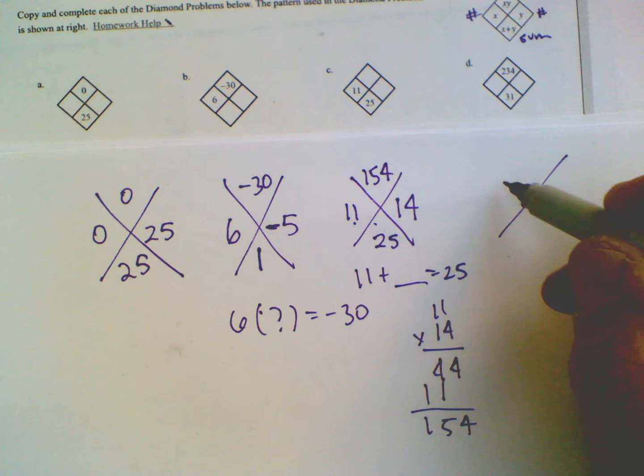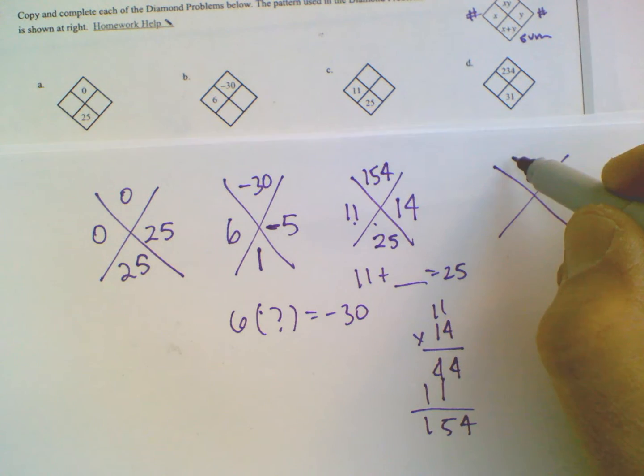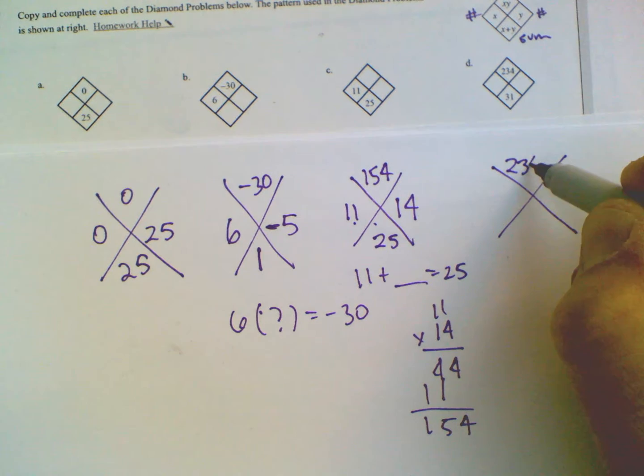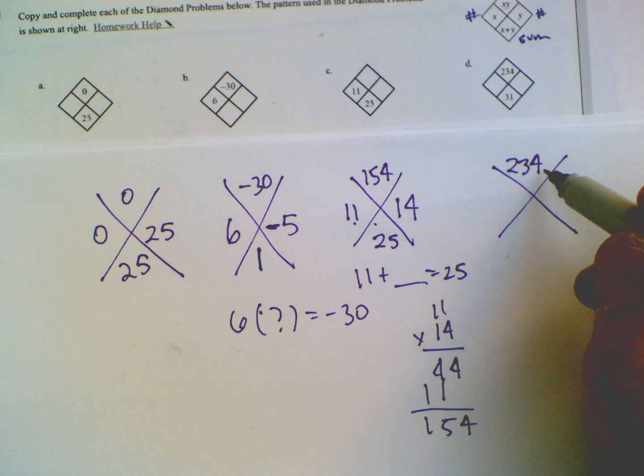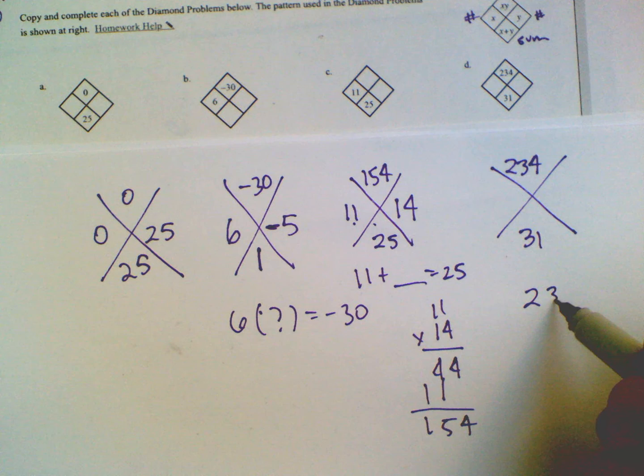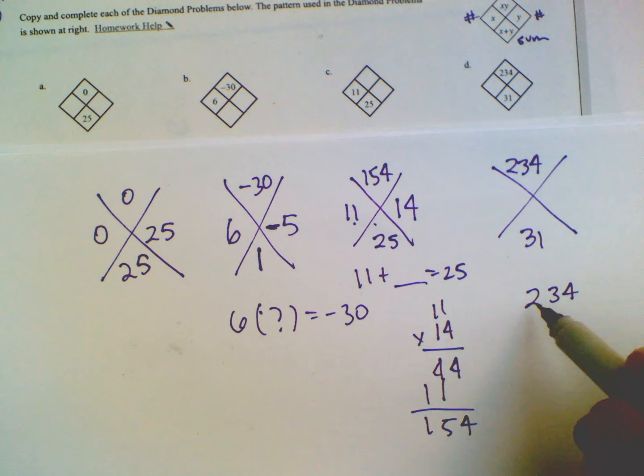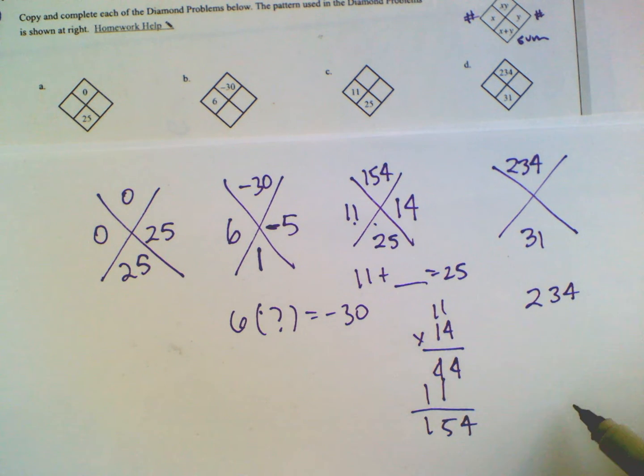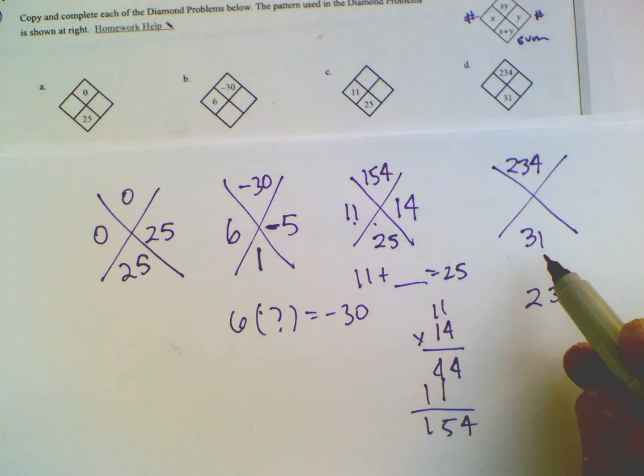Last one, D. Now I've got the product is 234 and the sum is 31. So to look at this one, I take my product, I'm going to take 234. I'm going to break it down to all the possible multiples and then find out which one's going to add to be 31.